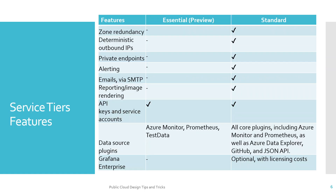This information is captured from Microsoft's site and shows the feature differences between Essential and Standard tiers. Key technical features include zone redundancy — which provides failover to another zone within the region — and deterministic outbound IPs, which are user-defined IP ranges that allow you to route traffic from Grafana to other sources. Private endpoints provide a secured connectivity capability when consuming Grafana from other services.